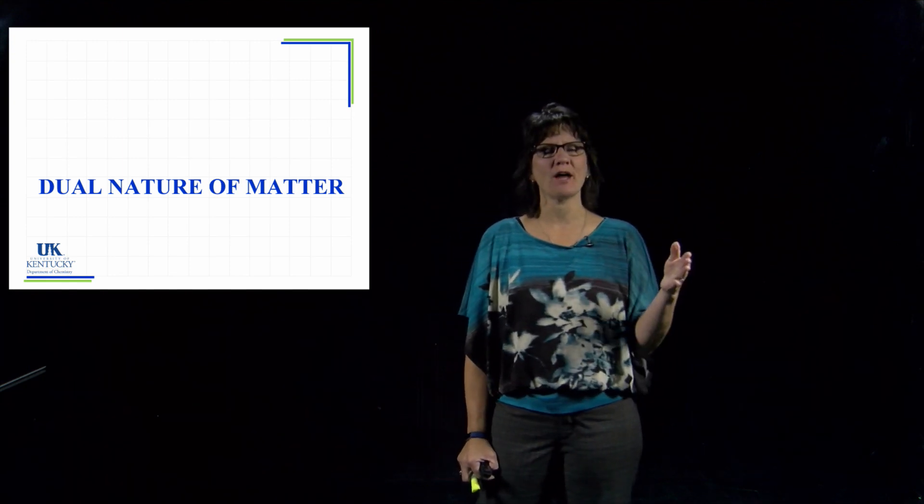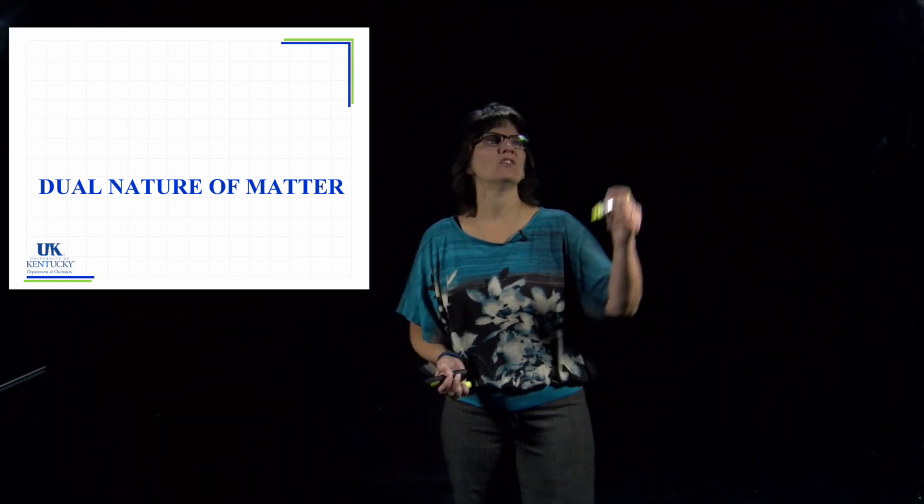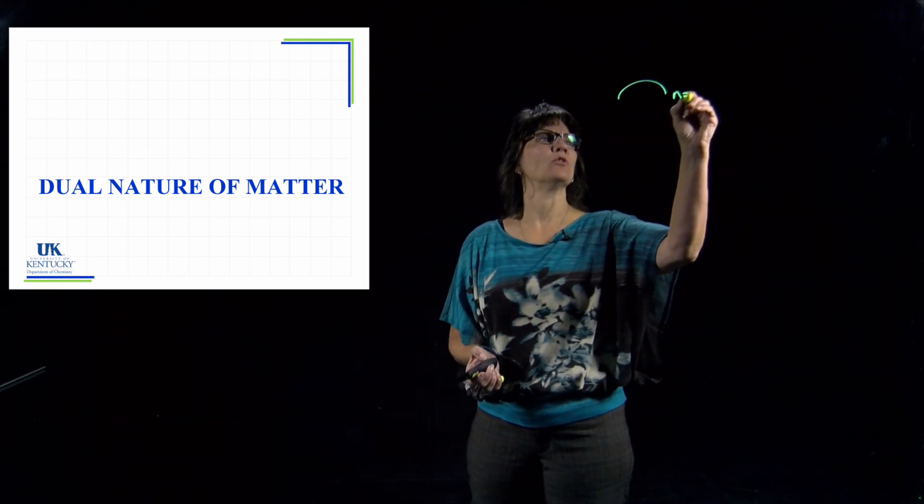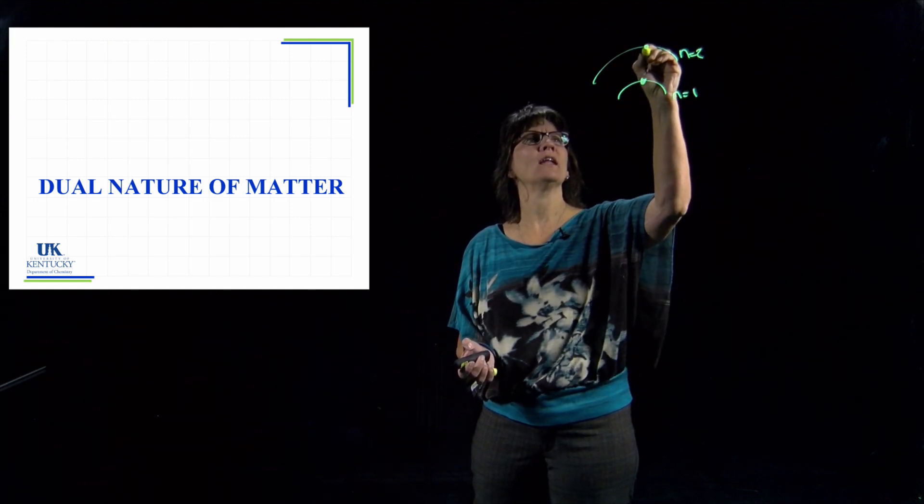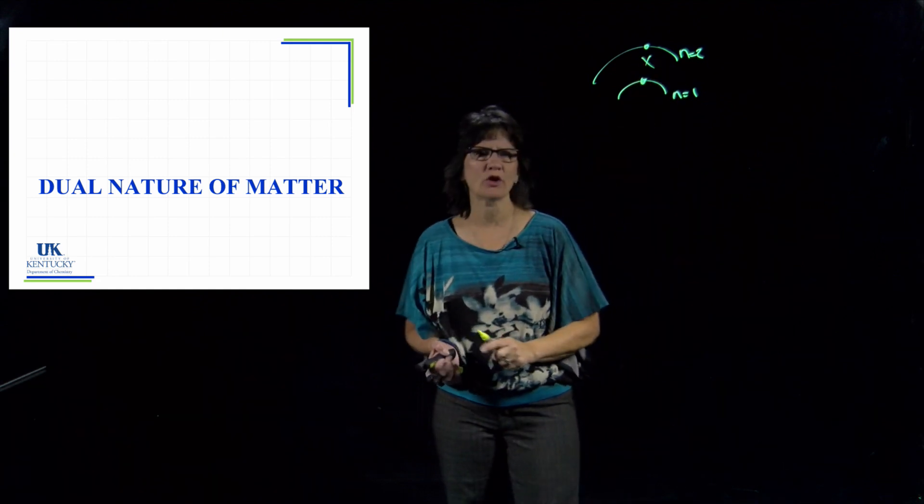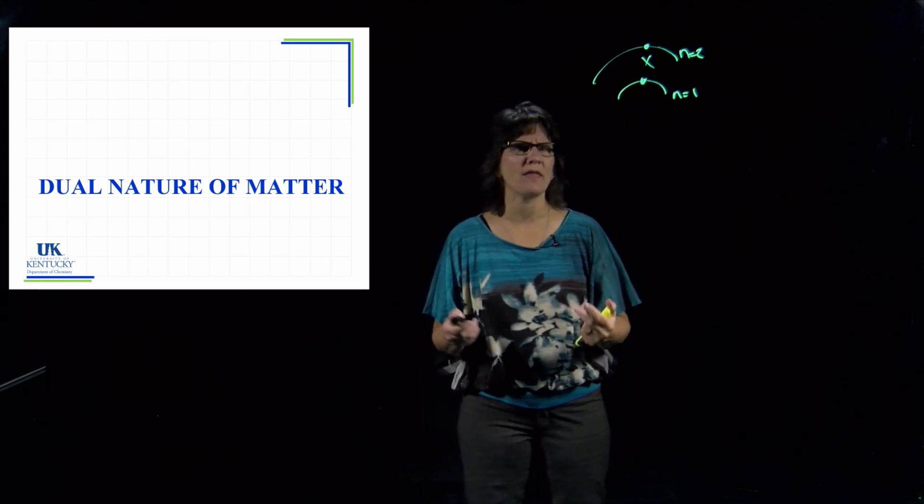Okay, so in our last lesson we saw that Bohr took the data from the spectrum, the line spectrum that was generated with hydrogen, and he proposed that electrons could exist in certain n levels—n equals 1, n equals 2. The electron could be here, the electron could be here, but he proposed that electrons could not be anywhere in between that. And the question would be, well okay, that's great, why would that be so?